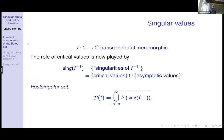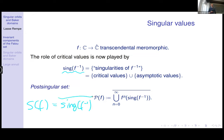We take the post-singular set: all singularities of the inverse function, iterate them, and take the closure. In our examples all singular values will be critical values, so if this is new, don't worry about it for this talk — but if you're at a transcendental dynamics conference, it's worth looking up. The results hold with either the closure or non-closure definition since our singular set will be discrete.